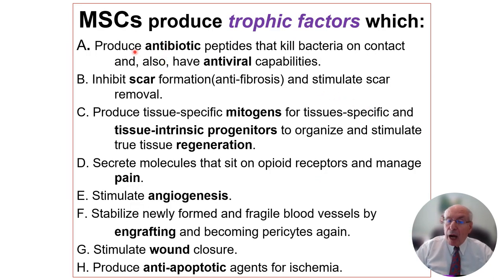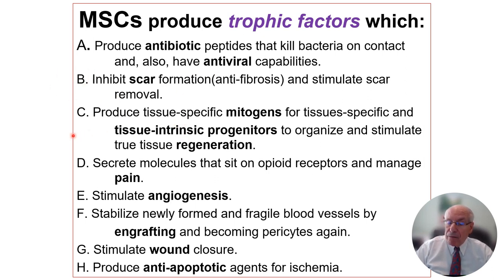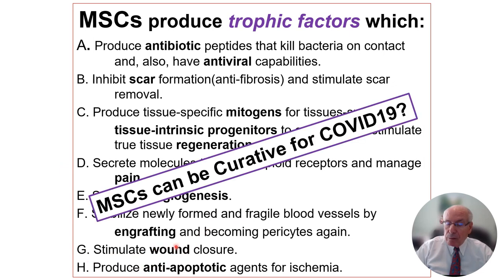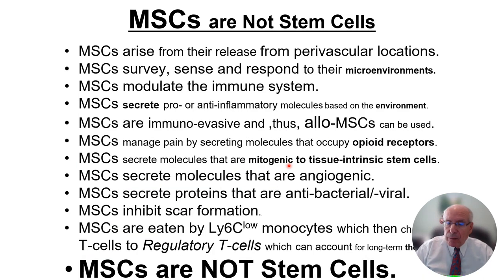MSCs produce a variety of trophic factors. Some are antibacterial — such as in uteruses during menstrual blood flow. They stop scar formation. They have mitogens that affect tissue-intrinsic progenitors, and molecules that sit on opioid receptors. They affect wound closure and regeneration. So MSCs can be, in receptive patients, curative for COVID-19.